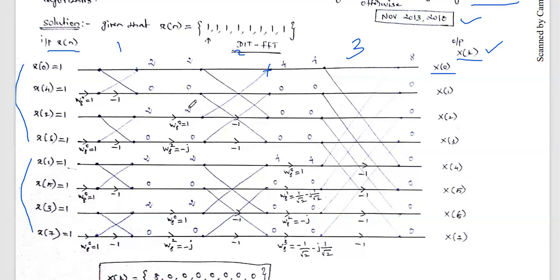Now we calculate the second stage outputs. The first adder receives 2 and 2, giving 4. The next node gives 0 plus 0 equals 0. For the third node, 2 plus 2 multiplied by minus 1 gives 2 minus 2 equals 0. Similarly 0 plus 0 is 0. For the lower four lines: 2 plus 2 equals 4, 0 plus 0 equals 0, 2 minus 2 equals 0, 0 plus 0 equals 0. Second stage outputs: 4, 0, 0, 0, 4, 0, 0, 0.